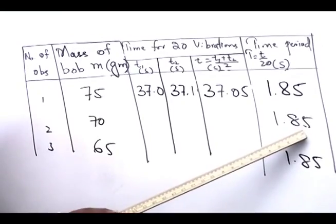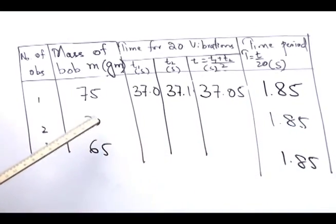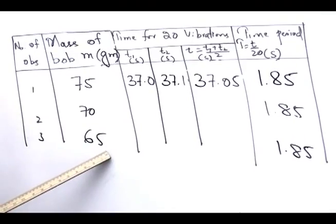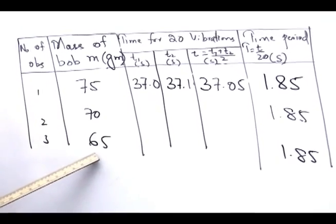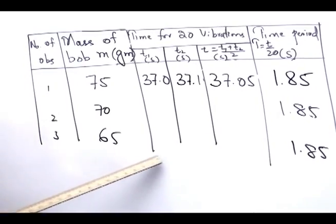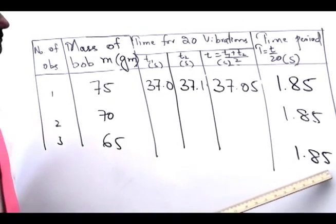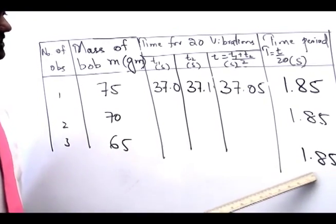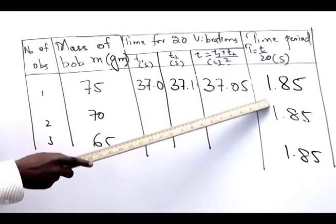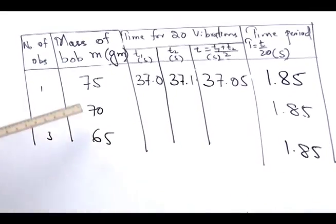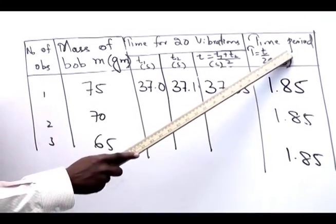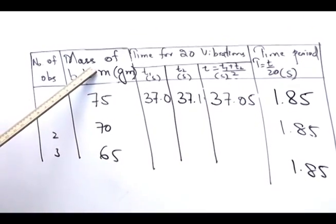For the third observation, we used a bob of mass 65 grams and computed the time period — it was once again 1.85 seconds. From these observations, we can see that the time period remains the same when the mass of the bob is changed, confirming that the time period of a simple pendulum is independent of the mass of the bob.